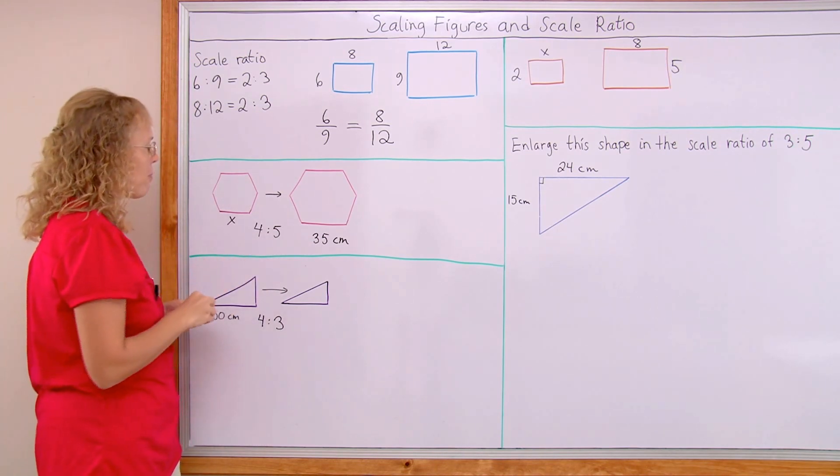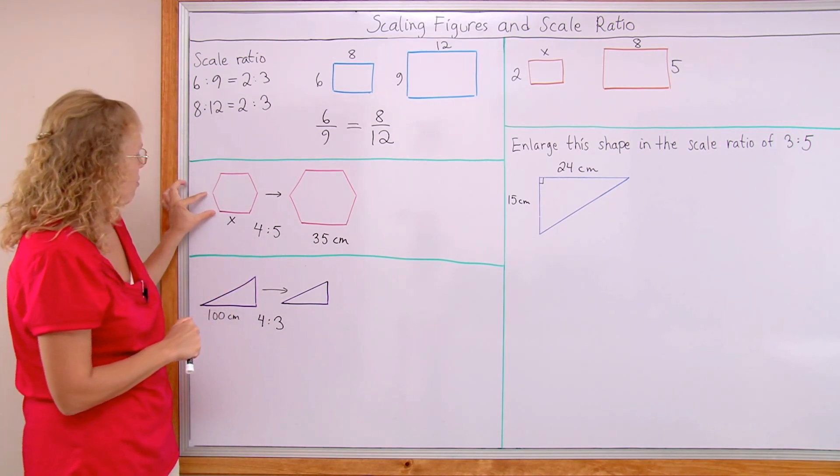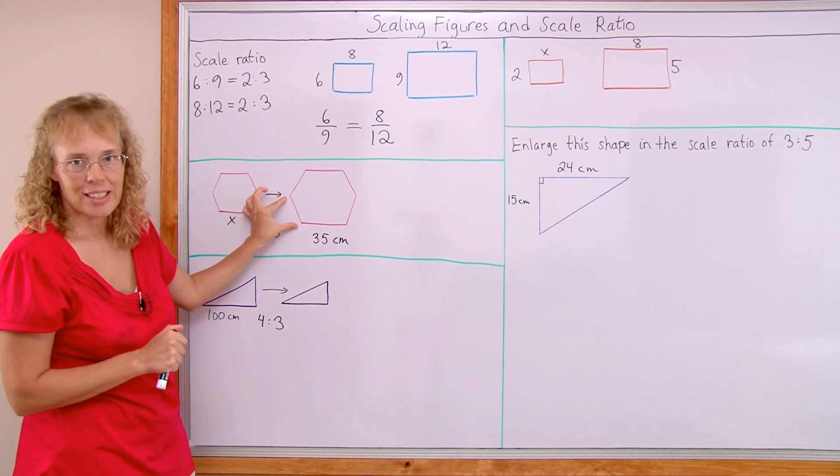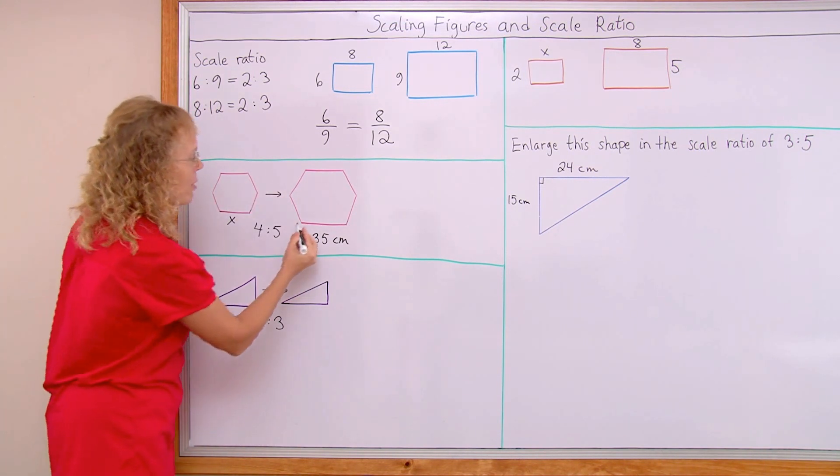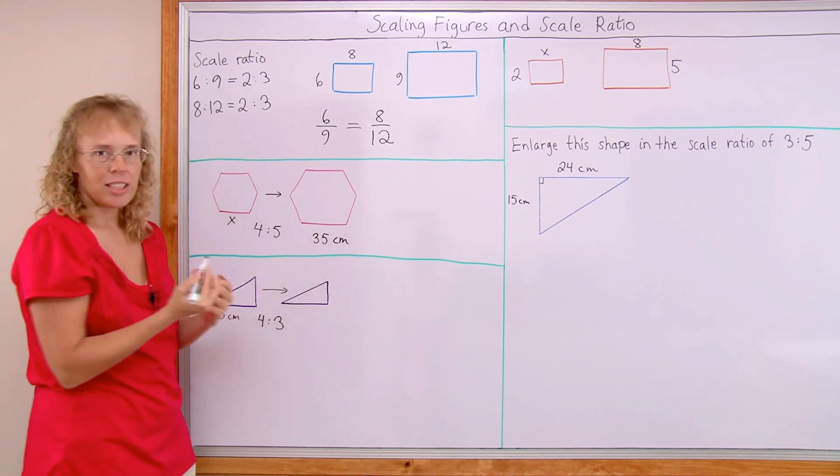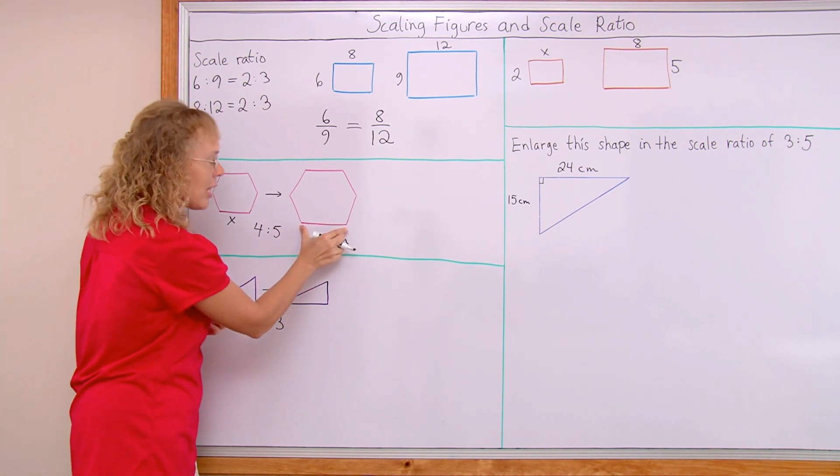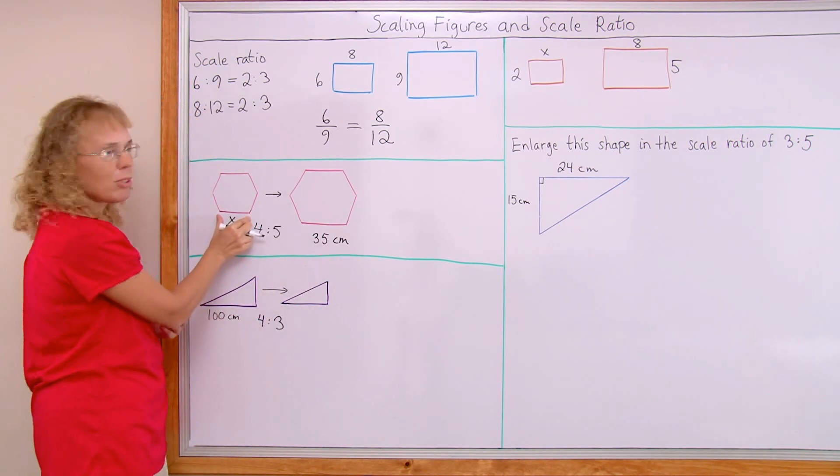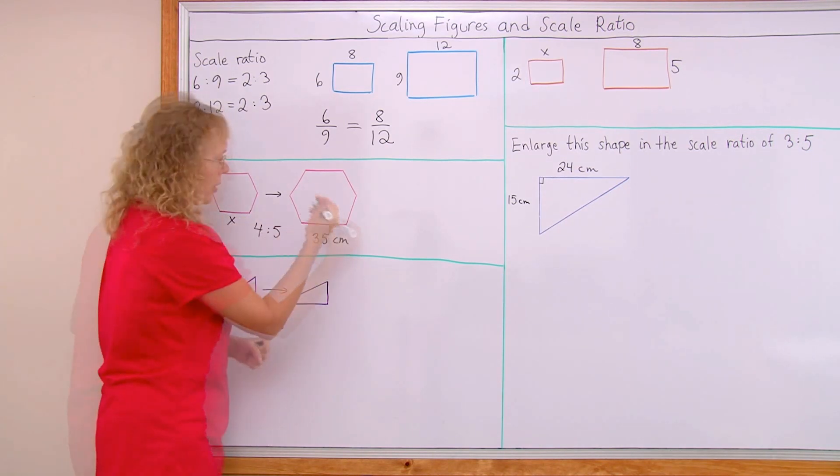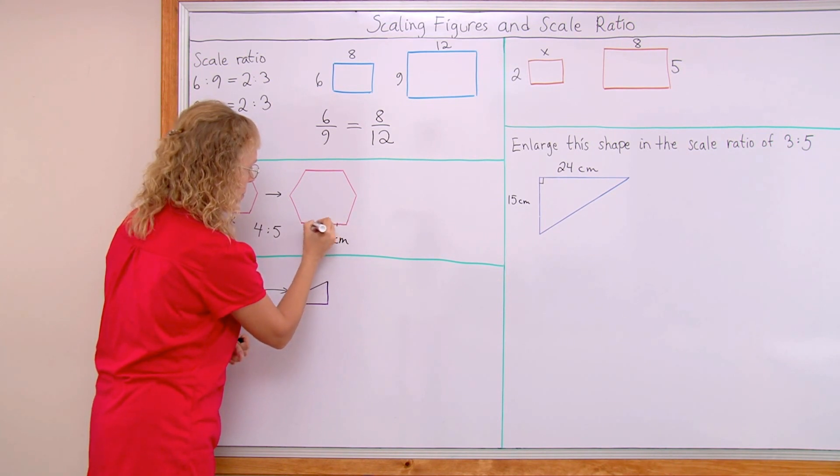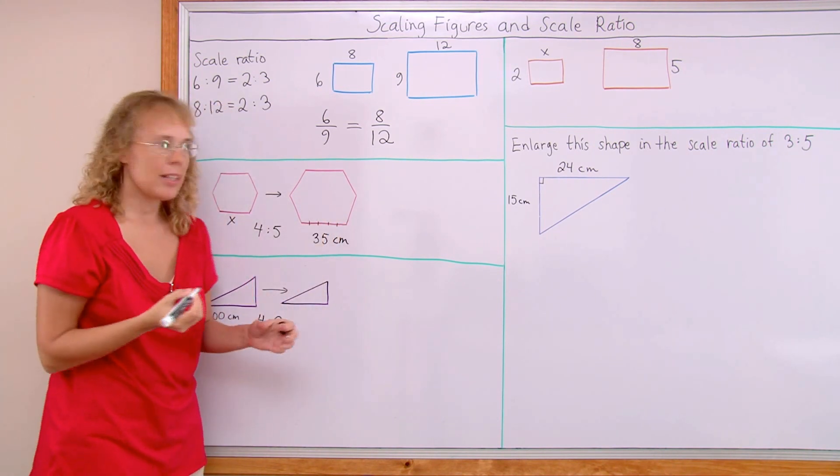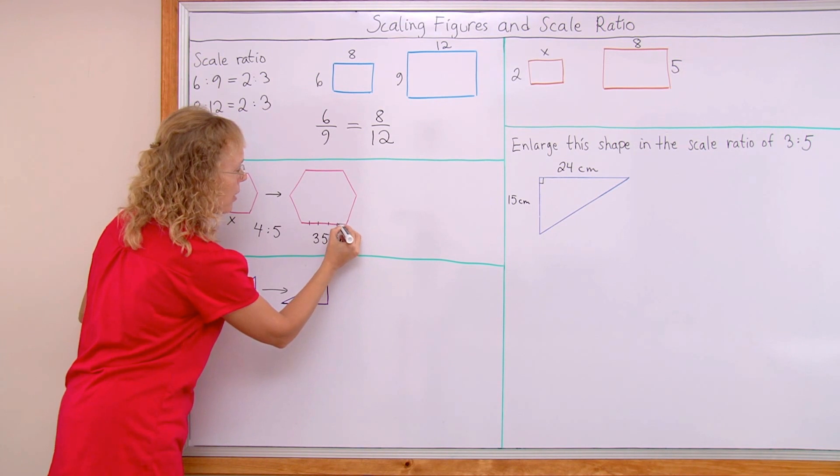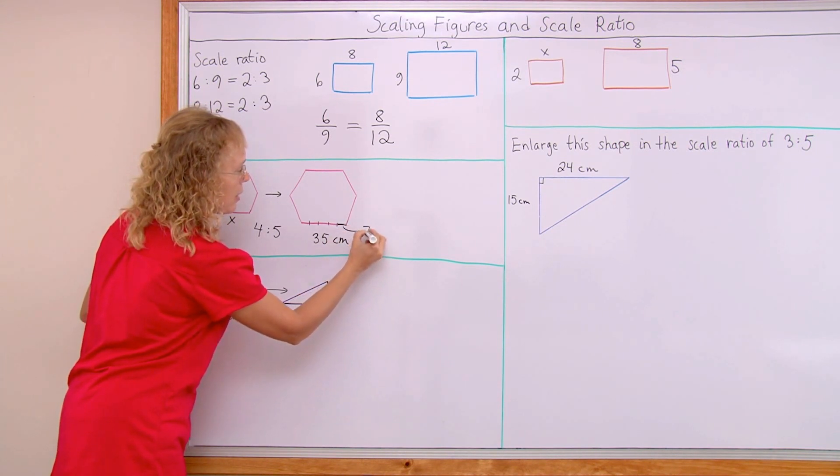So think of it this way. It is as if 4 parts here becomes 5 parts here. So I am thinking of this side that is 35 cm and I am thinking of it as 5 parts. And here the corresponding side is 4 parts. So if this is divided into 5 parts, like that, then I can of course calculate one of those parts being 7 cm.